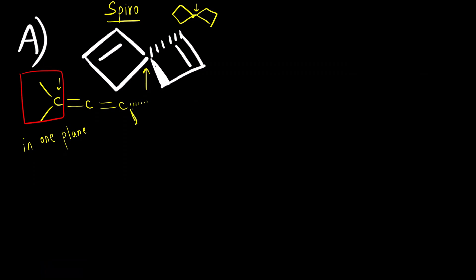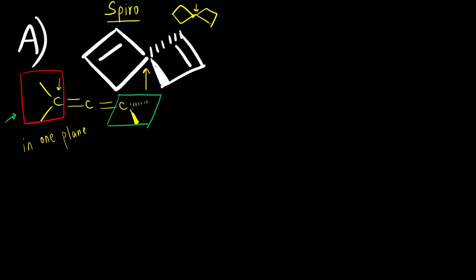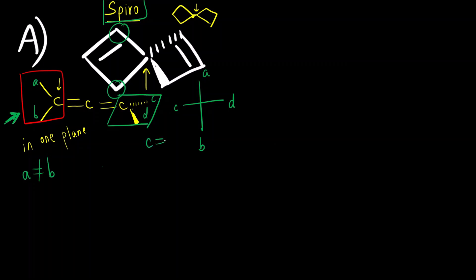The groups on one side of the allene system are in one plane, and the groups on the other side are perpendicular to the first plane — at an angle of 90 degrees. If you observe this molecule from the side, with groups A, B, C, and D: A is above, B is below, C is on the left, and D is on the right. In the allene system there is no chiral center as such, but the overall molecule is chiral. Similarly in spiro systems, the condition is: A should not equal B, and C should not equal D.